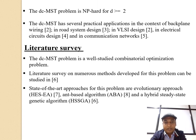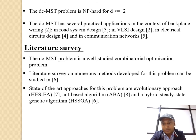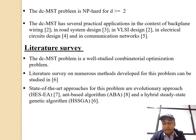This problem is NP-hard for D greater than or equal to 2. It has several practical applications. In the literature survey, this problem is well studied; a survey of the numerous methods developed for this problem can be studied in reference number 6. There are 3 state-of-the-art approaches for this problem: the velocity-based approach, an ant-based algorithm, and a steady-state genetic algorithm. We have compared our approach with these 3 algorithms.